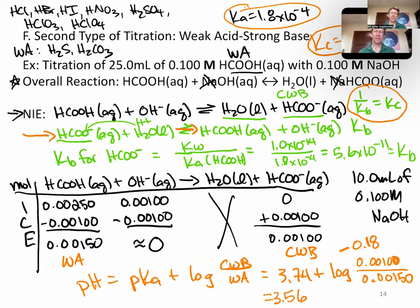So 0.001 divided by 0.0015 and then log it. I get minus 0.18. And my pH for this is going to be 3.56. This is a buffer and weak acid, strong base titrations will make buffers and there will be a buffer region for this.